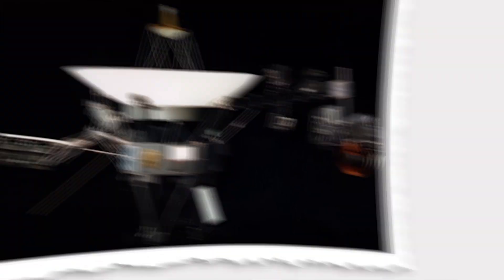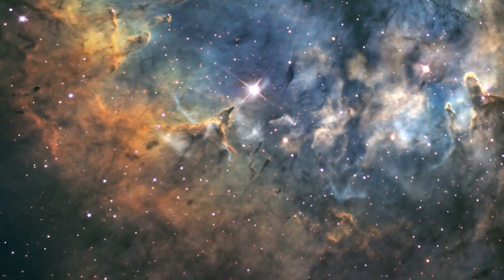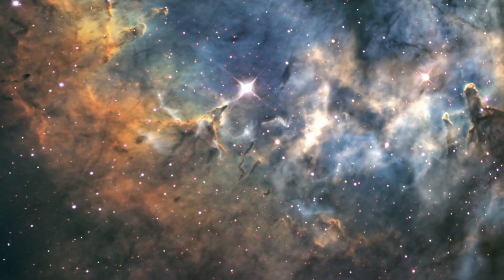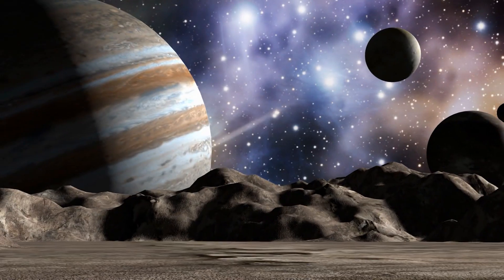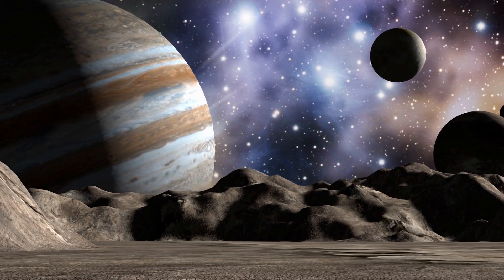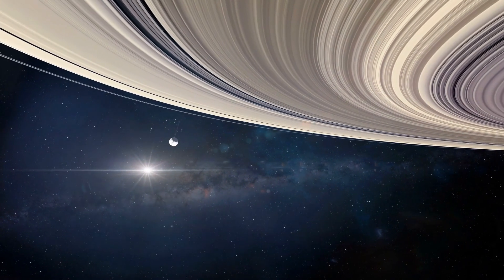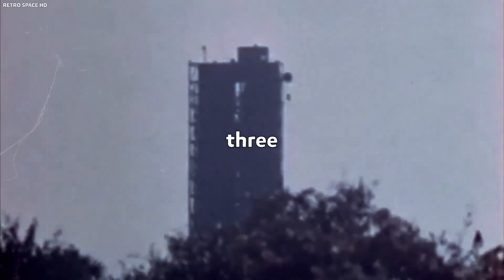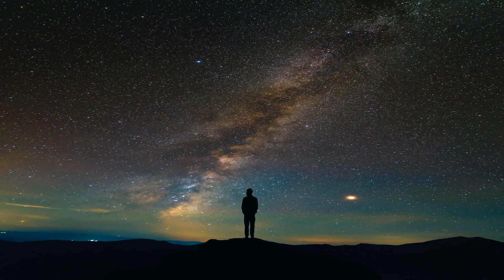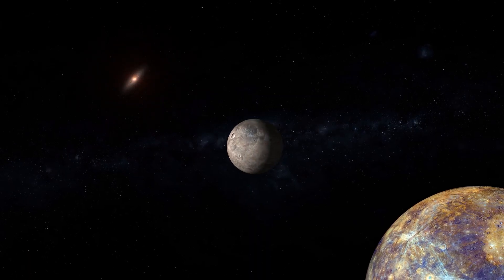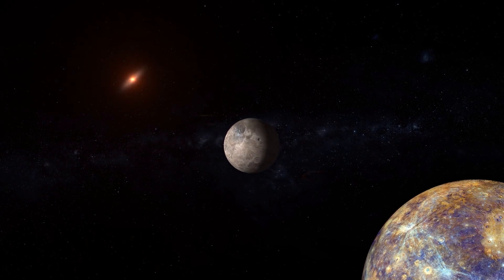Together, the twin spacecraft Voyager 1 and 2 have now spent more than 40 years exploring space. Initially, their primary goal was to investigate Jupiter and Saturn. It was really just a quick mission. NASA built two probes extremely fast in the mid-1970s to take advantage of this once-in-a-century opportunity to the outer planets because of a unique planetary constellation.